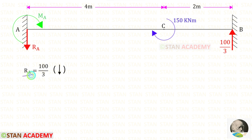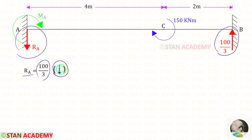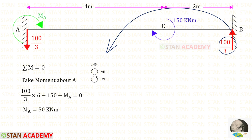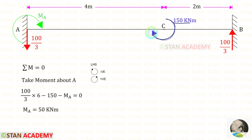Now let us find RA. We have found RB acting upwards. Since there is no load on the beam, the values of RB and RA will be the same but in opposite directions, so RA acts downward. Taking moments about A to find MA: RB acts anti-clockwise so it is positive, giving 100/3 times 6. The concentrated moment acts clockwise so it is negative. Assuming MA clockwise gives a positive result, confirming MA acts in the clockwise direction.